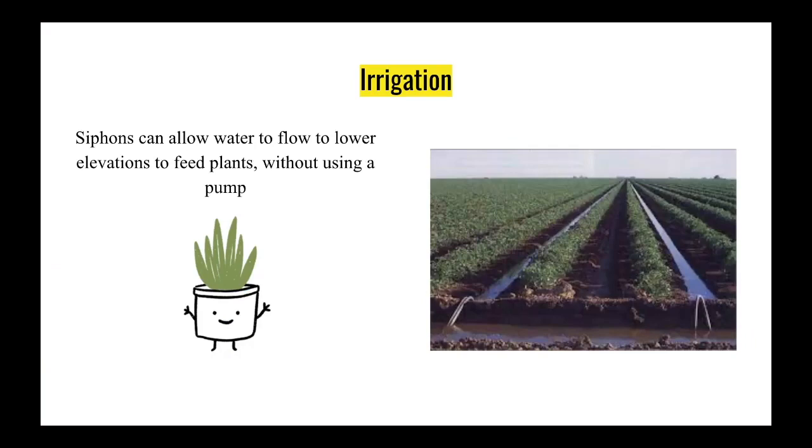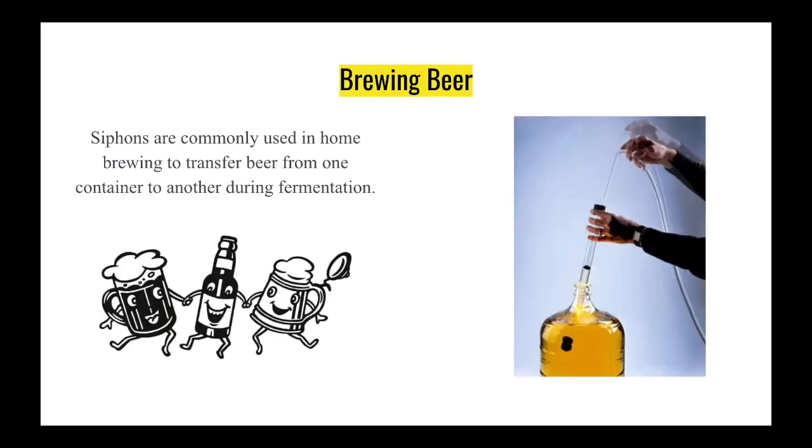Siphons can be used to water plants in gardens and fields, allowing for efficient and precise delivery of water to different areas. Siphons are used to transfer liquids between different vessels during the brewing and distilling process, allowing for the separation of liquids such as wort and beer, or whiskey and mash.